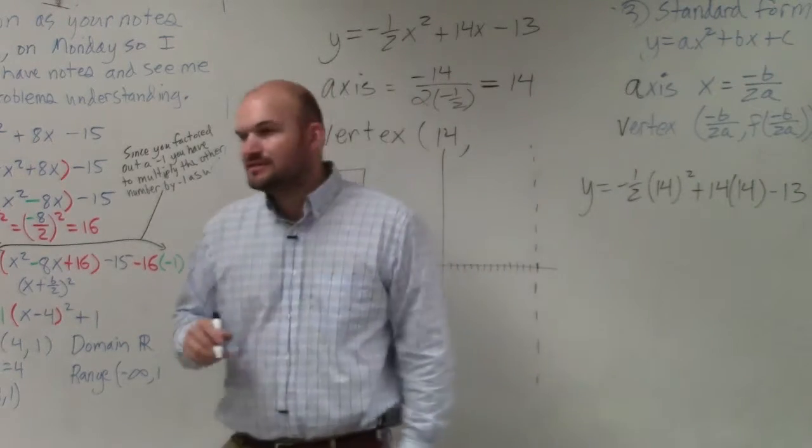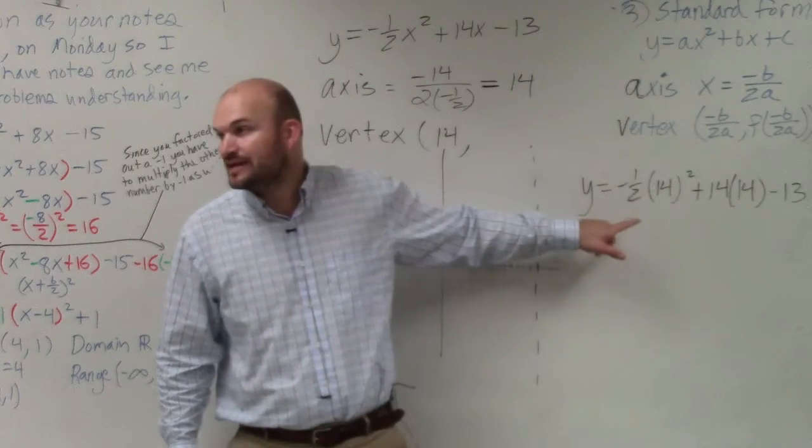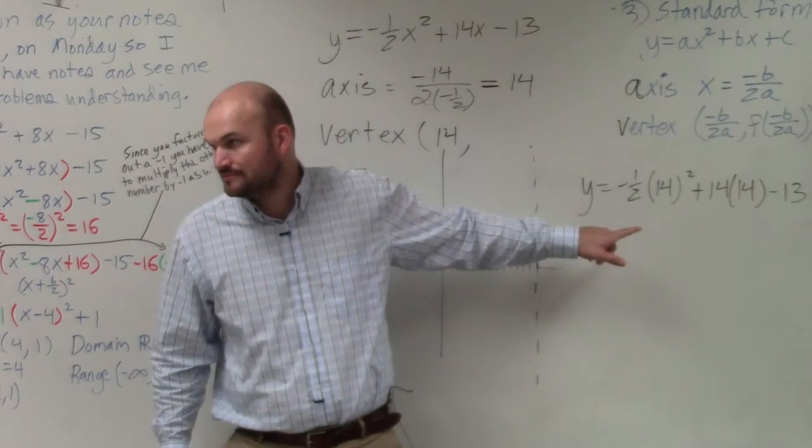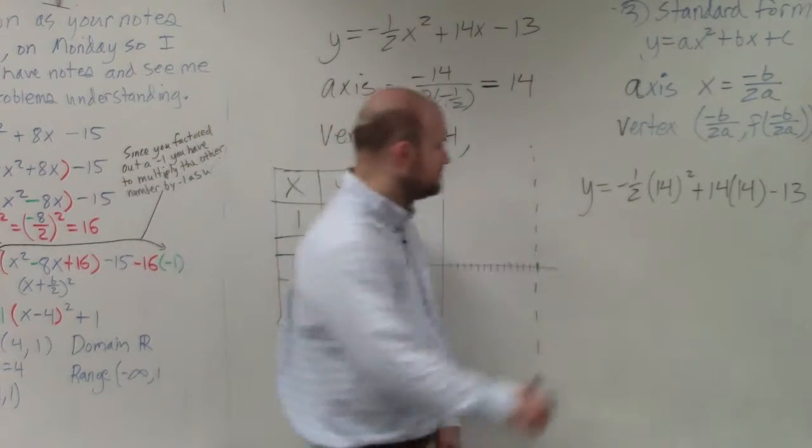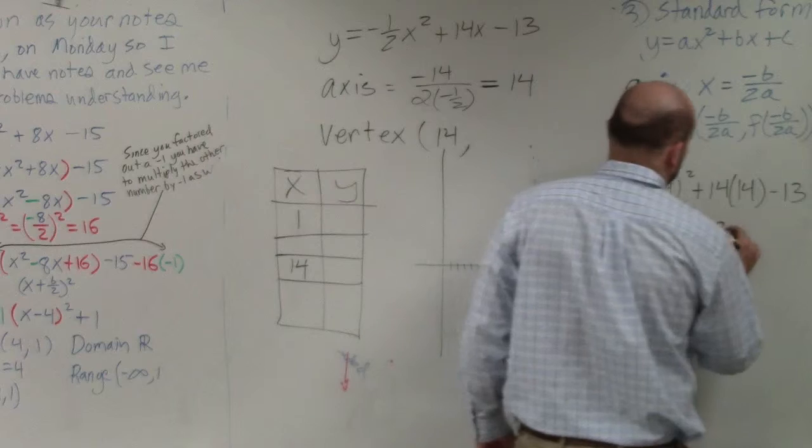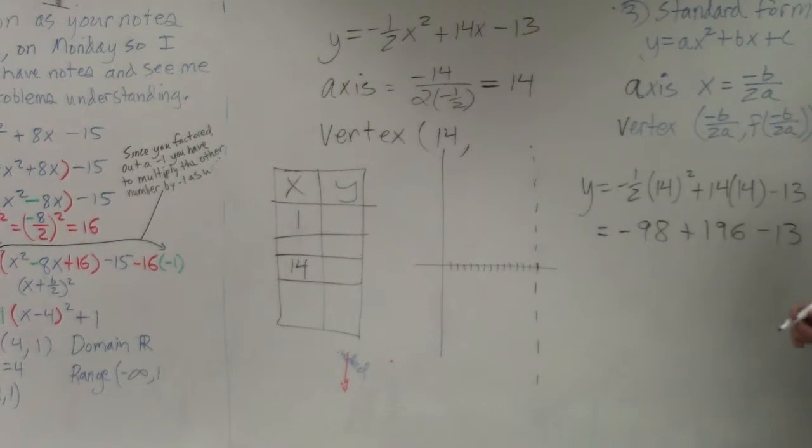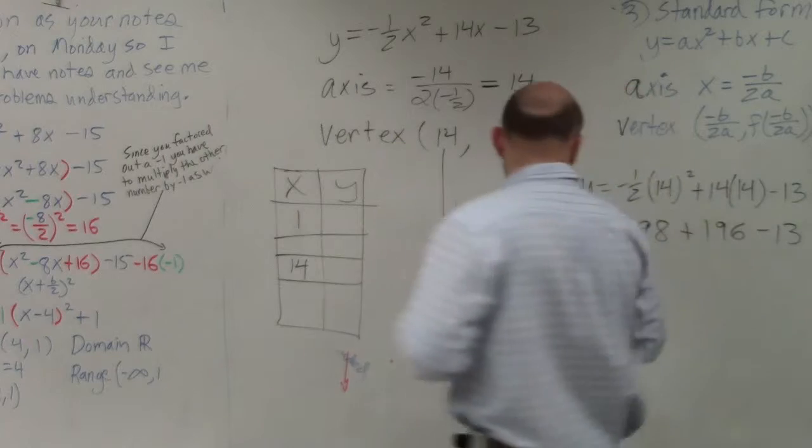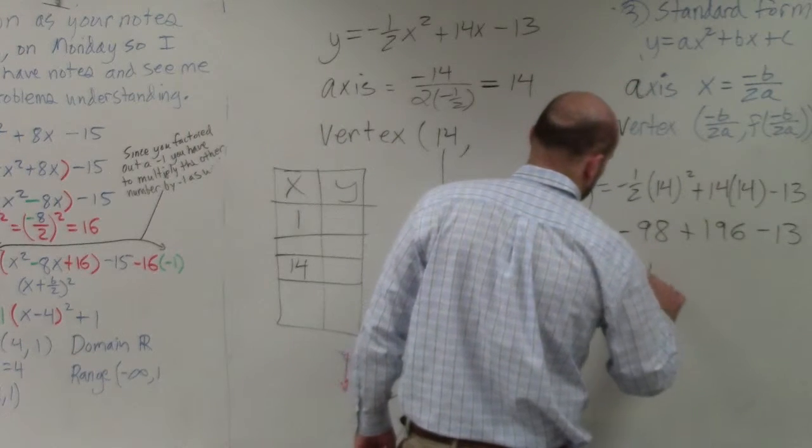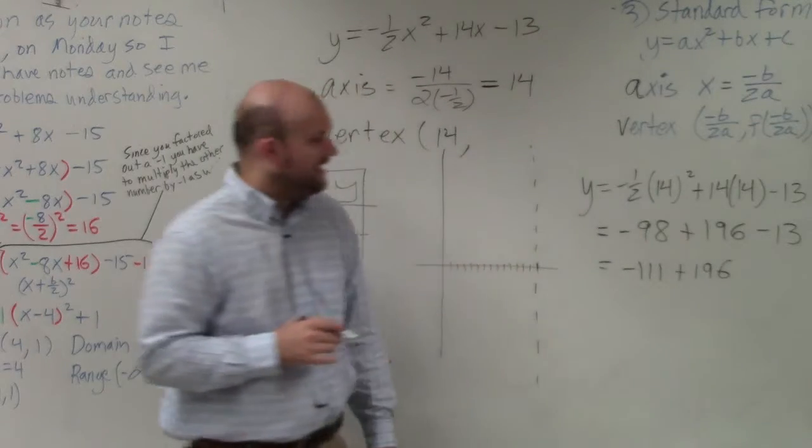So to find the vertex, I can do y equals negative 1 half times 14 squared plus 14 times 14 minus 13. So 196 times negative 1 half gives me negative 98? Yes. Okay. Plus 196 minus 13. So that's going to give me negative 111, which is going to give me 85.